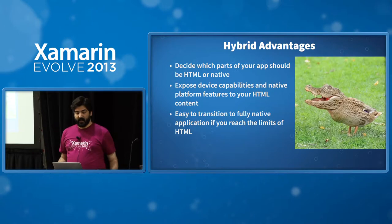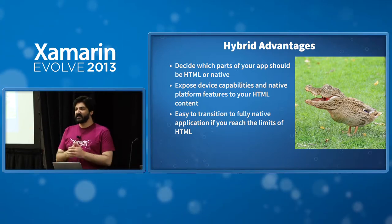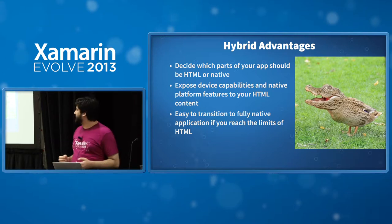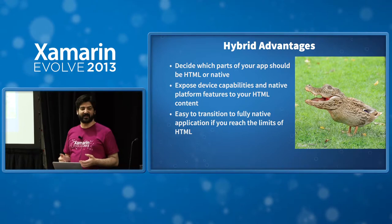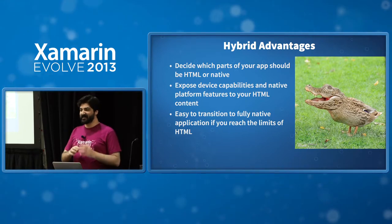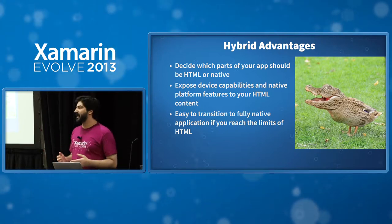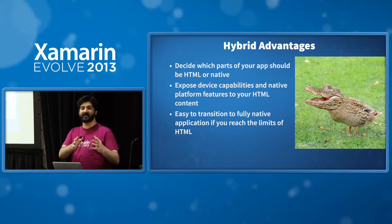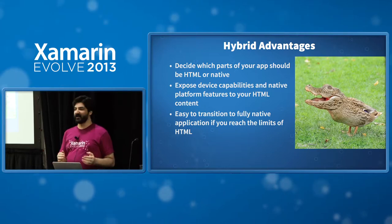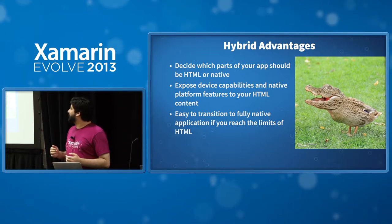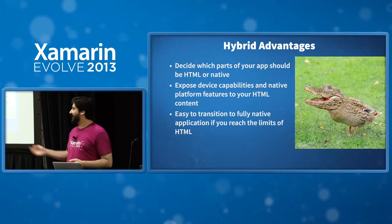Now let's talk about hybrid advantages. On this slide we have the Crocoduck. My colleague Joanne at Xamarin suggested the Crocoduck isn't quite majestic enough — when you've got a high-performance native app that uses HTML in just the right way, it's a work of art. She suggested the Pegacorn instead — a hybrid of Pegasus and Unicorn. I think the Pegacorn is the perfect analogy for a high-quality hybrid native app. Unfortunately I couldn't find any pictures of a Pegacorn in its natural habitat, so I stuck with the Crocoduck.